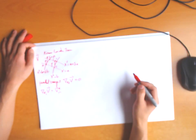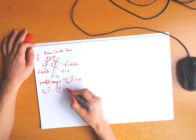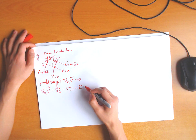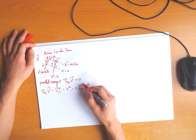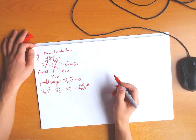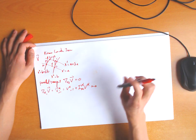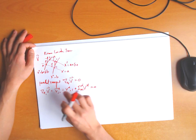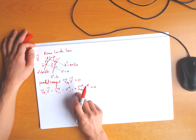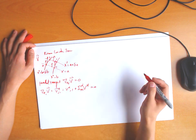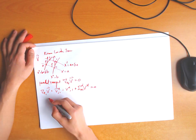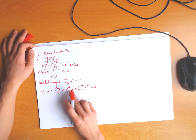Covariant differentiation is just this: v^alpha_,1 plus the Christoffel symbol times v^mu, and this whole thing is set to zero. The Christoffel symbol is here — alpha is here. By definition, covariant differentiation equals zero by parallel transport.